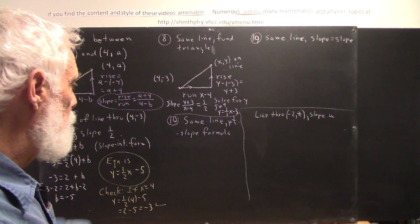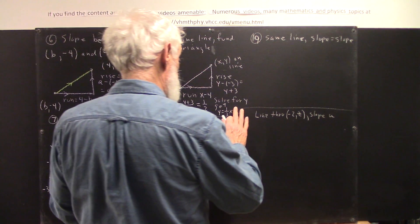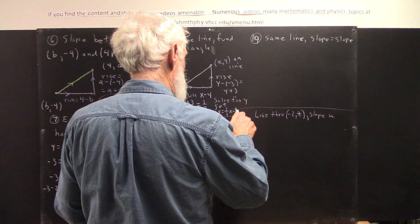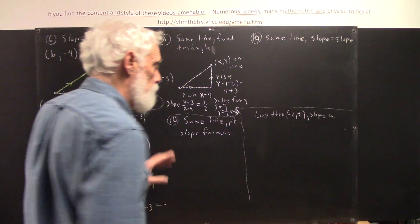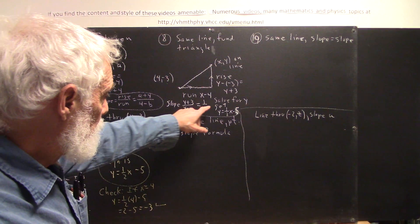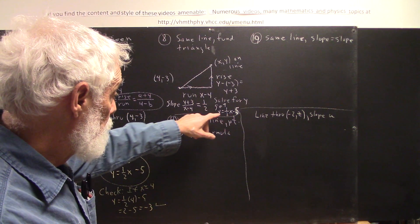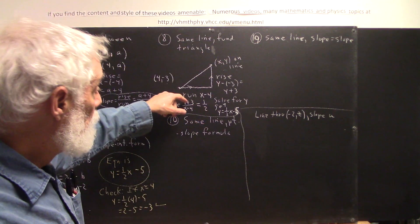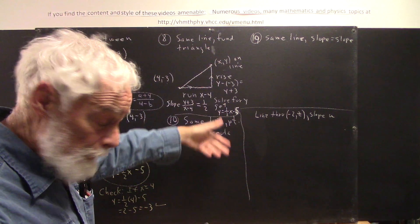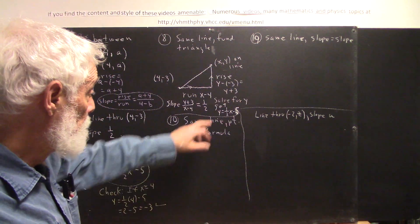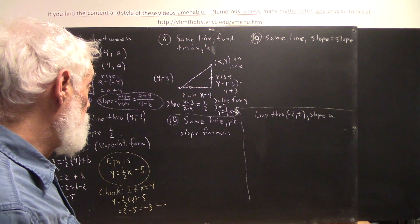We get y equals 1 half x minus 3. The same thing, I'm sorry, 1 half x minus 5. I should have actually solved it. x minus 4 times 1 half gives us our 1 half x. And 1 half of negative 4 is negative 2. Subtracting 3 from negative 2 gives us the negative 5. So we get y equals 1 half x minus 5.